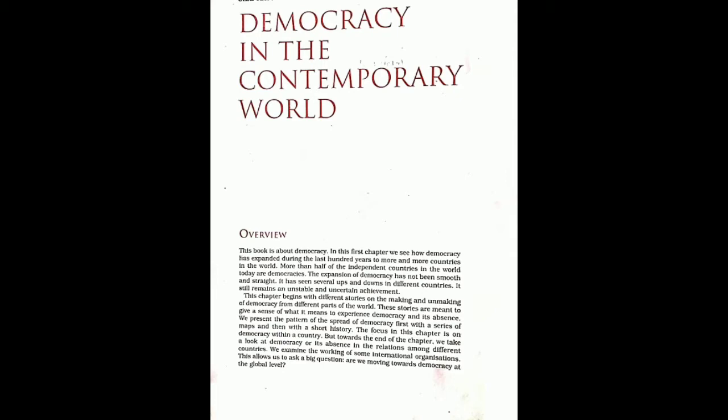We can say that the rulers are democratic. In this book about democracy, in this first chapter, we see how democracy has expanded during the last hundred years to more and more countries in the world. More than half of independent countries in the world today are democracies. But we don't know how their type of democracy was established. In this chapter, we will know how they found their democracy, and the expansion of democracy has not been smooth and straight.